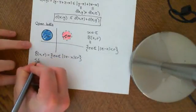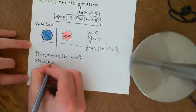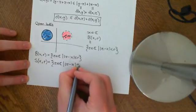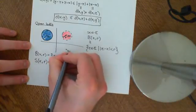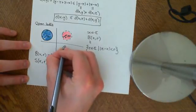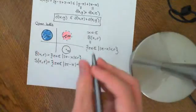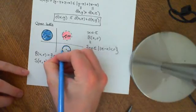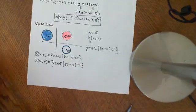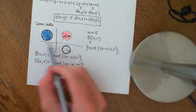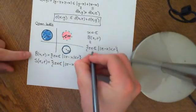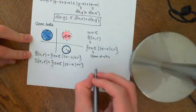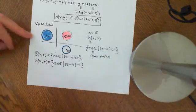A sphere centred at X of radius r is the set of all points in the complex plane such that the distance from that point to X is exactly equal to r. It is just the boundary of one of these closed balls — it does not include the interior, only the boundary. So spheres in the complex plane take the form of circles, and open and closed balls are referred to as open or closed discs in complex analysis.